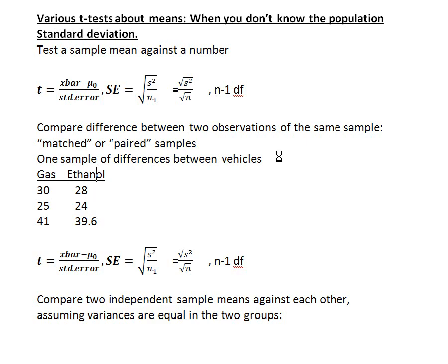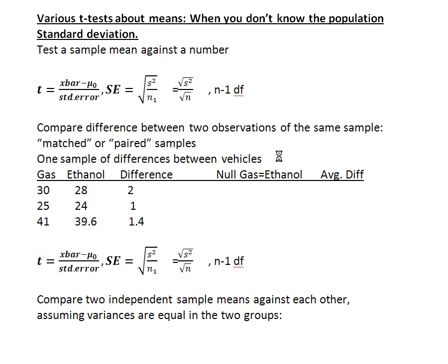With a paired t-test, we just calculate the difference between each pair and study those differences. Car 1 has a difference of 2, Car 2 has a difference of 1, Car 3 has a difference of 1.4. If the null hypothesis says gas mileage on gas equals that on ethanol, then the differences should be 0 — in other words, the average difference equals 0. All we do is study this column of differences as our dataset, with 25 observations of differences.